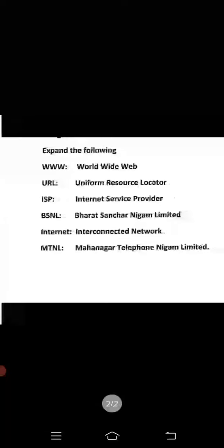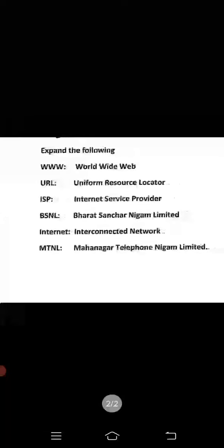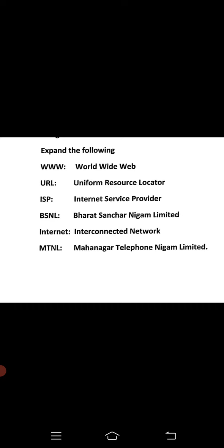Next, expand the following. Beta, ye aapki full forms hai jo aapne learn karni hai. WWW - World Wide Web, URL - Uniform Resource Locator, ISP - Internet Service Provider, BSNL - Bharat Sanchar Nigam Limited, Internet - Interconnected Network.